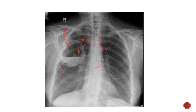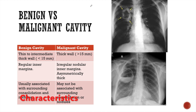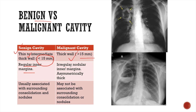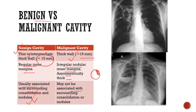When a cavity is filled with fluid, it is commonly due to lung abscess or may also be from hemorrhages within the cavity. While looking at the characteristics of the cavity, we can also differentiate benign from malignant cavity lesions. Benign cavities have thin to intermediate thick walls, less than 15 mm in thickness, while malignant cavities have thick walls of more than 15 mm. Benign cavities have regular inner margins, while malignant cavities have irregular nodular inner margins with asymmetrically thick walls. Benign cavities are usually associated with surrounding consolidation and nodules, whereas malignant cavities may not be.